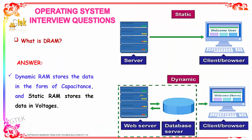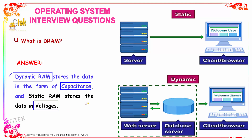What is DRAM? DRAM stands for dynamic RAM. It stores data in the form of capacitance, whereas static RAM stores data in terms of voltages.